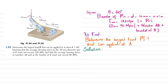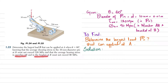Welcome back. Problem 1.24 was discussed in the previous problem, and this problem is similar — Problem 1.25. The statement is: determine the largest load P that can be applied at A when theta is 60 degrees, knowing that the average shearing stress in the 10 mm diameter pin at B must not exceed 120 MPa, and that the average bearing stress in member AB and in the bracket at B must not exceed 90 MPa.